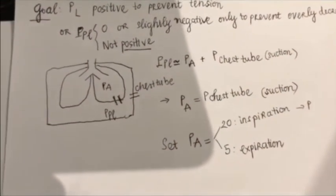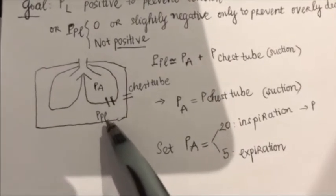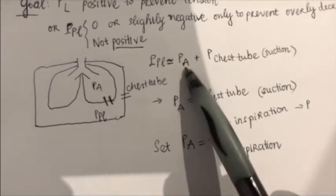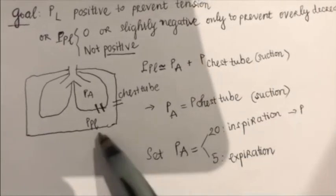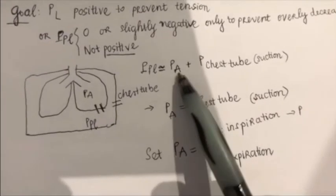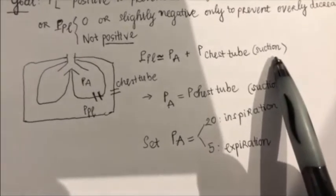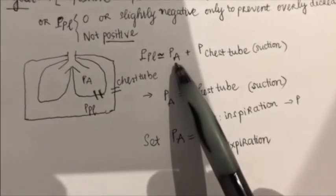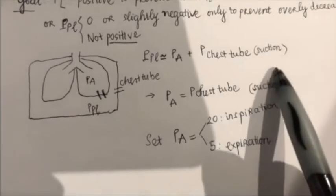So basically, for this patient, the pleural pressure will be equal to the alveolar pressure plus the chest tube suctioning pressure, because they're all connecting to each other. So knowing this equation, I came up with an idea of making the alveolar pressure equal to the chest tube suctioning pressure.